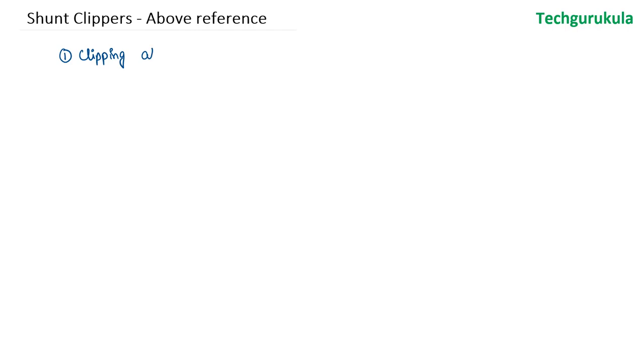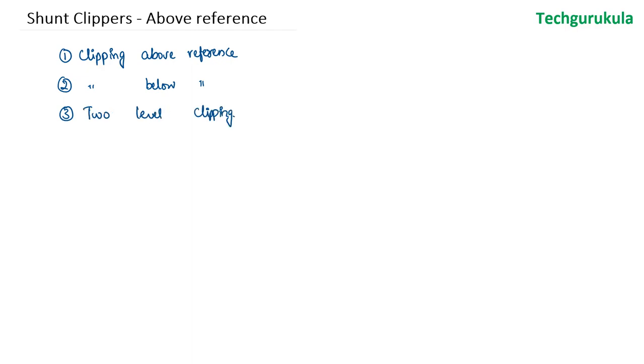Shunt clippers are divided into three categories: number one, clipping above a reference; number two, clipping below reference; and number three, two-level clipping.